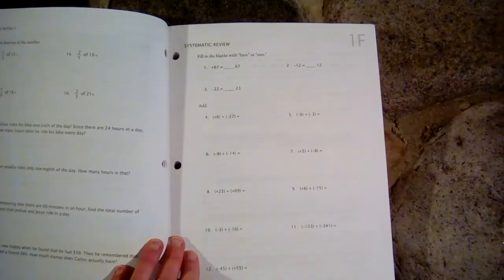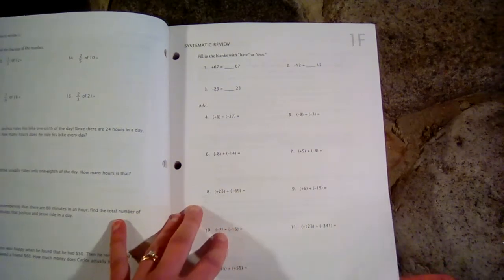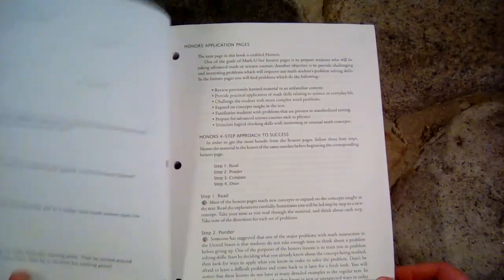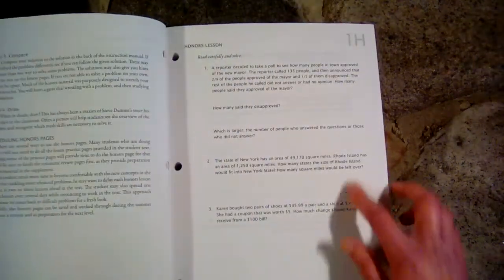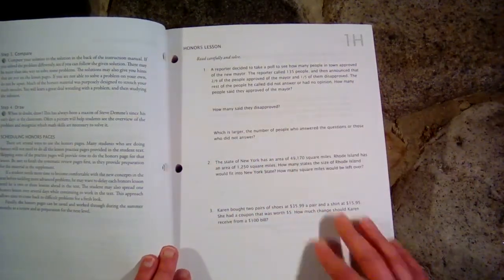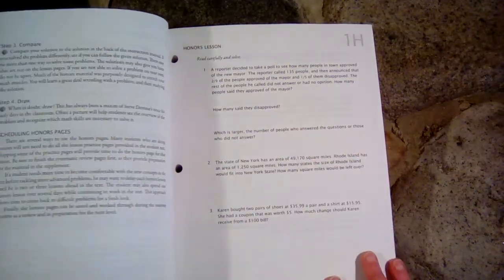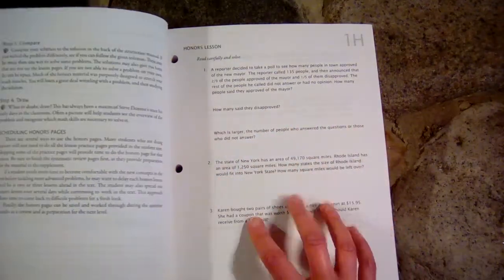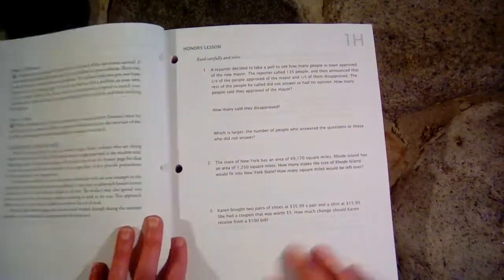Now in the previous book Zeta that we have been using, the next one was called G, but now they are calling it H because they're calling the extra part of the lesson the honors lesson. So these are extras if you're interested in additional math concepts.